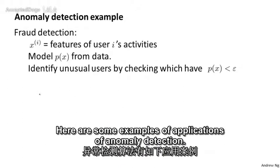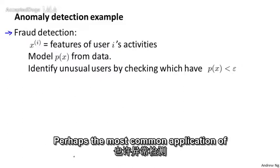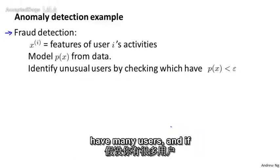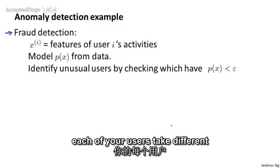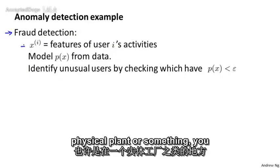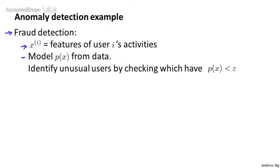Here are some examples of applications of anomaly detection. Perhaps the most common application of anomaly detection is actually fraud detection. If you have many users and if each of your users take different activities, you can compute features XI of the different user's activities.